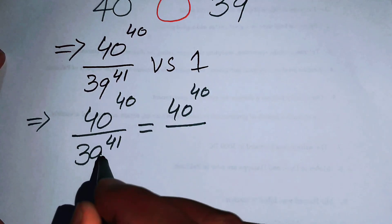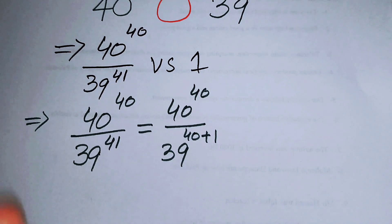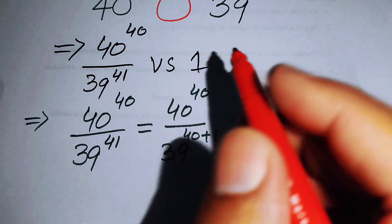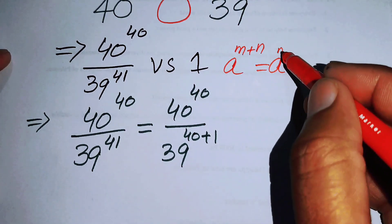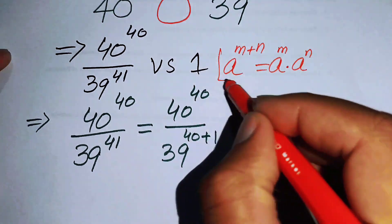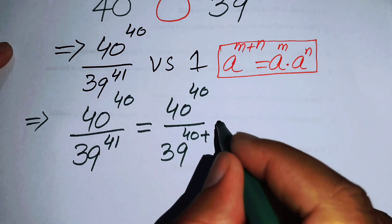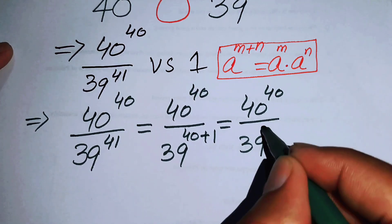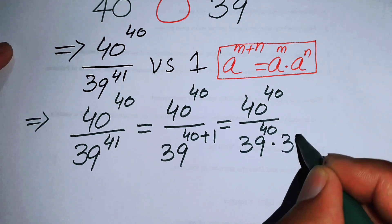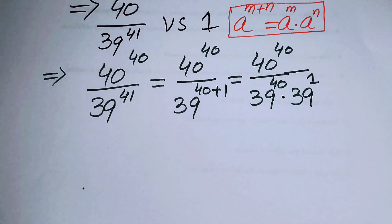I can rewrite the exponent 41 as 40 plus 1, so 39 to the power of 41 becomes 39 to the power of 40 plus 1. Applying the exponential law — a to the power of m plus n equals a to the power of m times a to the power of n — the denominator becomes 39 to the power of 40 times 39 to the power of 1.